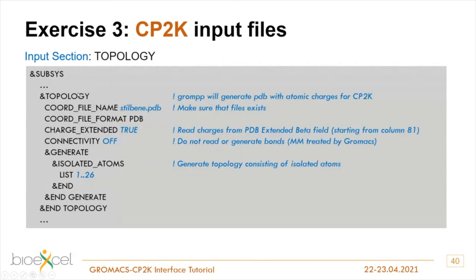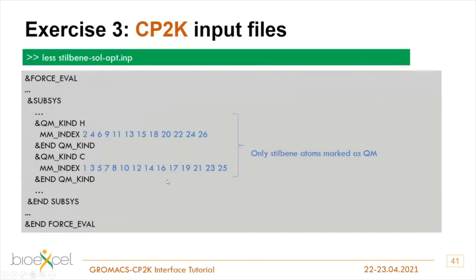In the next section you see for each kind of atom the indexes of atoms - this list is automatically generated. For each kind of atom seen in the QM system, the indexes are listed. In the MM section, everything is basically switched off because GROMACS fully handles the MM region description - non-bonded forces, Ewald summation, and PME are all switched off. CP2K doesn't need to handle those.